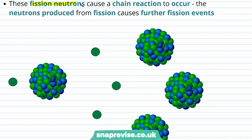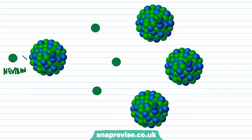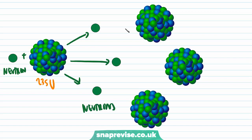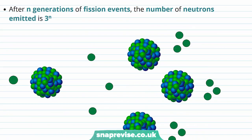These fission neutrons cause a chain reaction to occur. The neutrons produced from fission cause further fission events. The initial process of adding a neutron to uranium-235 produces three neutrons, which can then go on to interact with three different uranium-235 nuclei, causing more fission. After n generations of fission events, the number of neutrons emitted is 3 to the power of n.